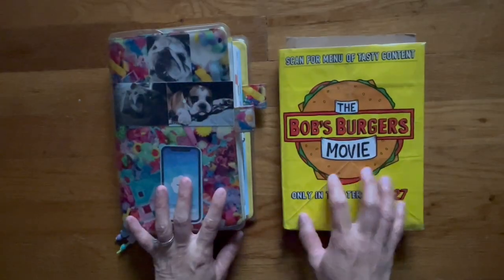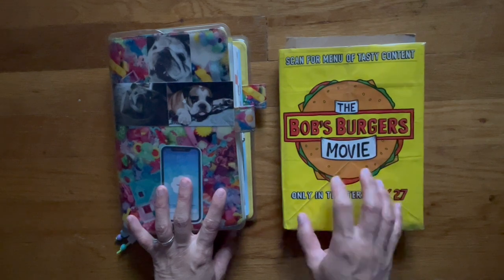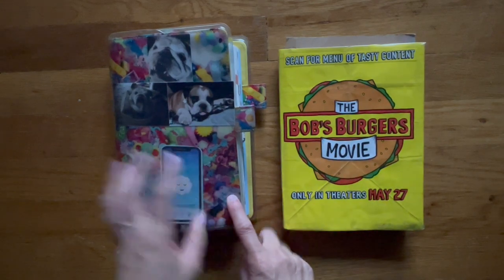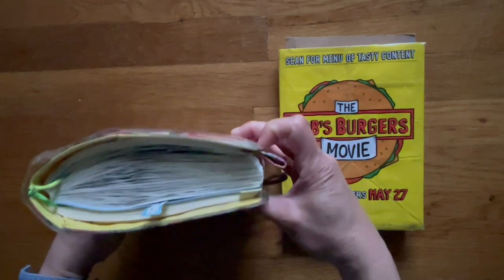So in front of you I have my Hobonichi Cousin Size 5-Year Diary and then this is my regular cousin. This is what it looks like now.